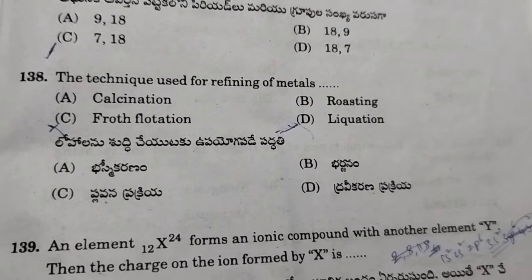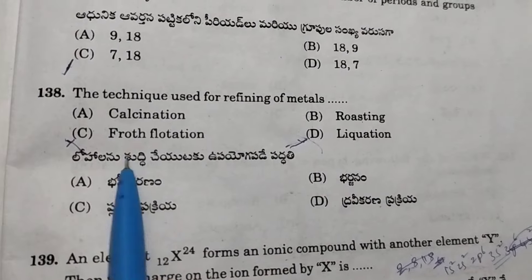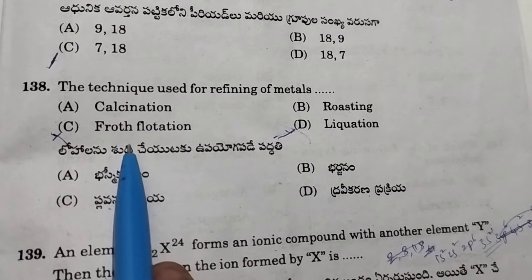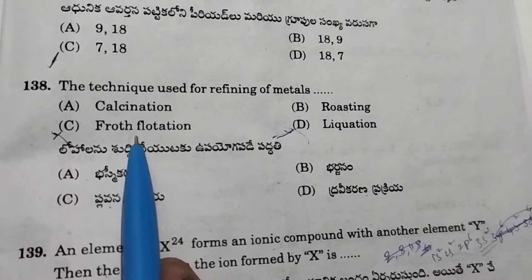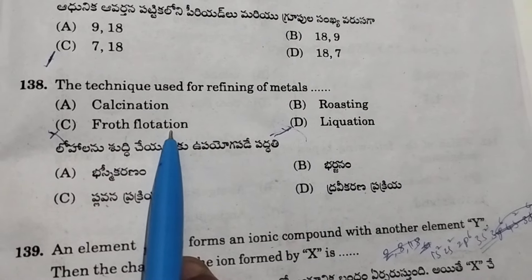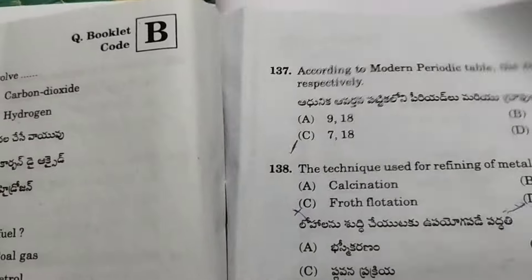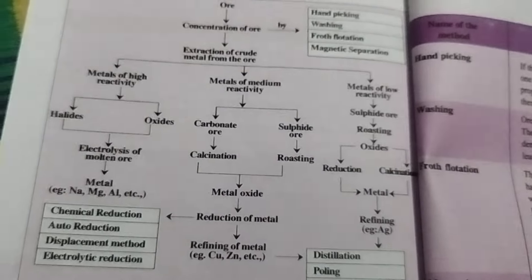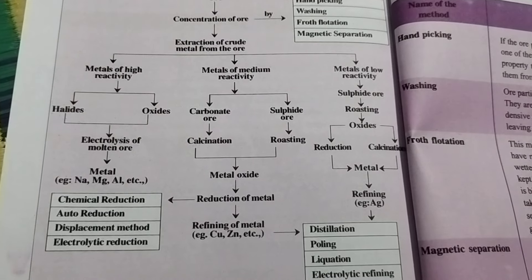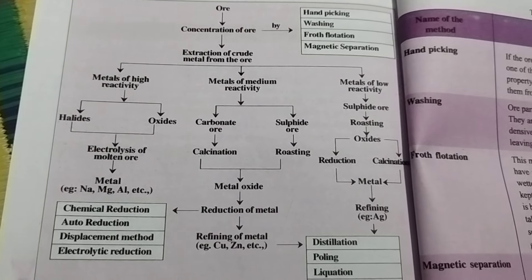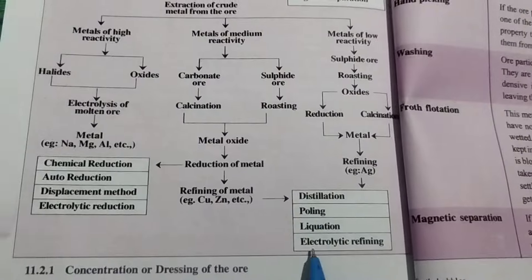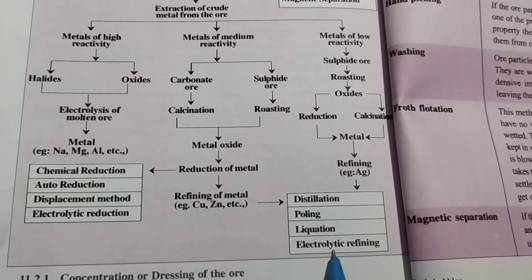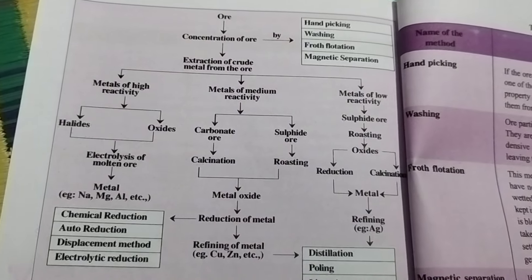Next, the technique used for refining of metals. Please check the 10th class textbook, lesson 11 on metallurgy. Refining methods used include distillation, polling, liquation, and electrolytic refining. Froth flotation is used in ore dressing, not refining.